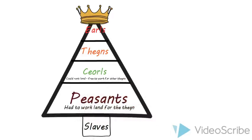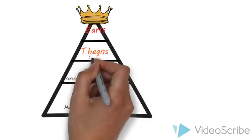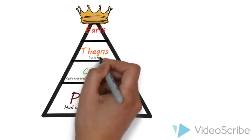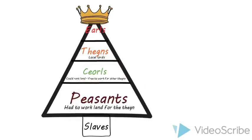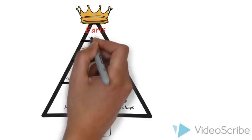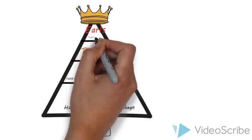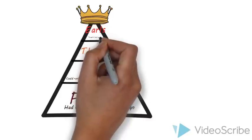The thanes were like the local lords of the manor, who owned bits of land about the size of Great Torrington. And the earls owned huge tracts of land about the size of Devon.